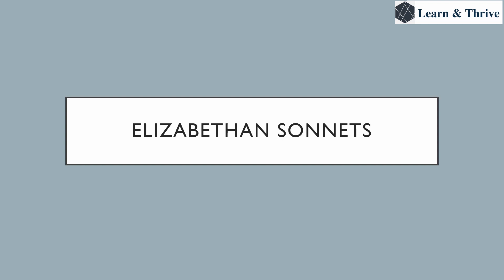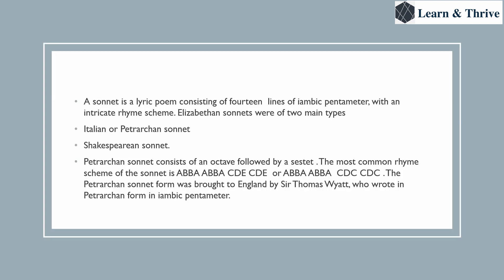First, a sonnet is a lyric poem consisting of 14 lines of iambic pentameter with an intricate rhyme scheme. It is written in 14 lines and has a certain set of rhyme schemes. I have made a video on poems — if you have not seen that, you can go to the top right-hand side of this video to find the link.